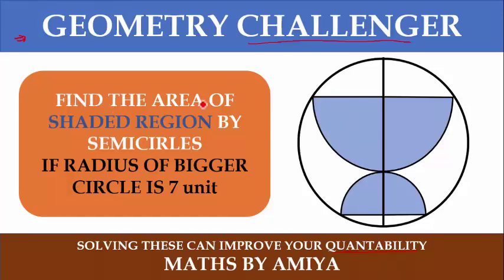The question is in front of you. Find the area of the shaded region by semicircles if the radius of the bigger circle is 7 units.